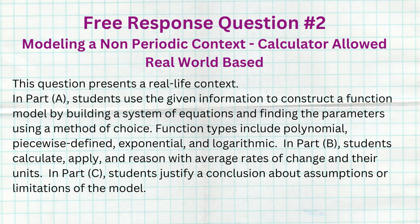The second FRQ deals with modeling a non-periodic problem, and you may use a graphing calculator. You'll be presented with a real-life problem in context. In Part A, students use the given information to construct a function model by building a system of equations and finding the parameters — function types include polynomial, piecewise defined, exponential, and logarithmic. In Part B, students calculate, apply, and reason with average rates of change and their units. In Part C, students justify conclusions about assumptions or limitations of the model.